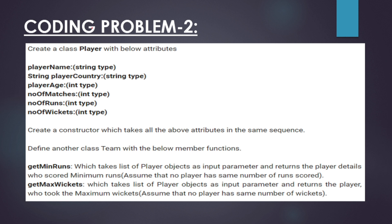This is a coding problem. The first task is to create a class called Player with the following attributes: player name (string), player country (string), player age, number of matches, number of runs, and number of wickets. These are the six attributes we have to define in the init method of the Player class.